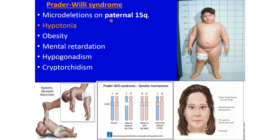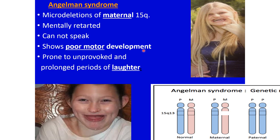When the deletion problem involves the father's side — the paternal chromosome — it results in Prader-Willi syndrome. Features include hypotonia, where muscles lack normal contractions, obesity, mental retardation, hypogonadism, and cryptorchidism — undescended testes in males. It involves chromosome 15, where the long arm of the paternal chromosome shows a deleted portion.